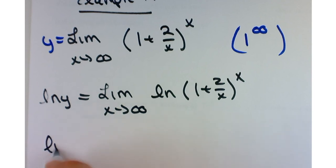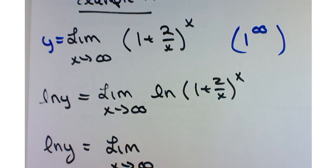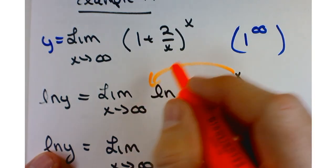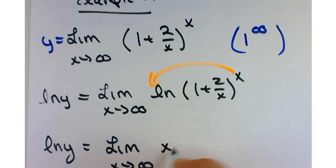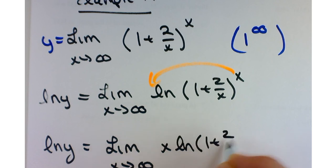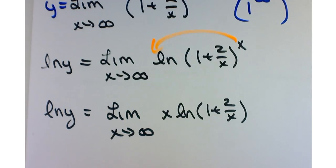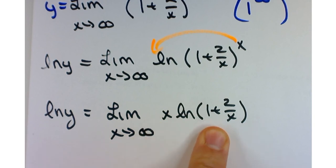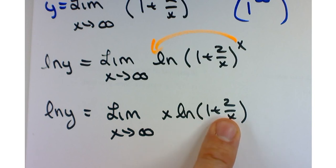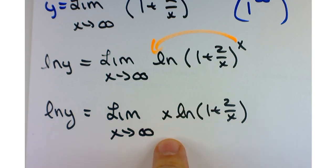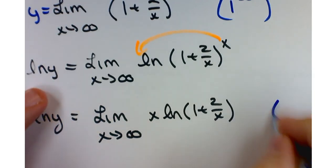What do we do next? We bring the x down using the power rule for logarithms, and we get x times ln(1 + 2/x). Is this in the form for L'Hôpital's rule? As x approaches infinity, x goes to infinity, but the logarithmic term — ln of (1 + 0) — is ln(1) which is 0. So now we've got infinity times 0, and it's still not quite in the right form.